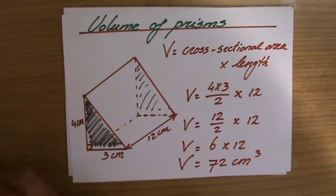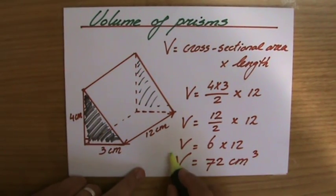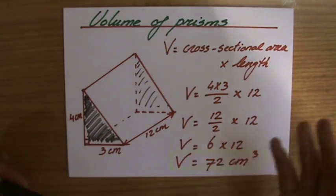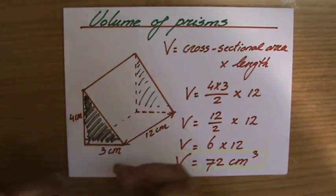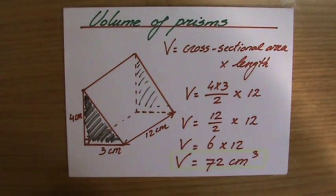So for any prism where I have to calculate the volume for, I take the area of the cross section. In this case, that is a triangle, but it could also be a square or a rectangle or anything else, perhaps a compounded figure. And I multiply that area of the cross section by the length.